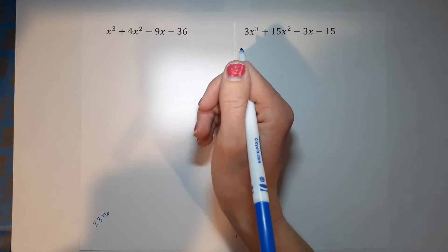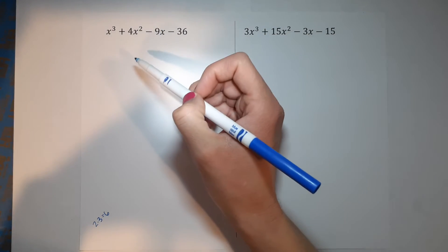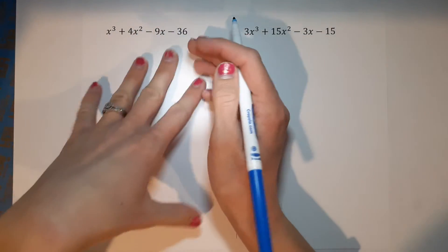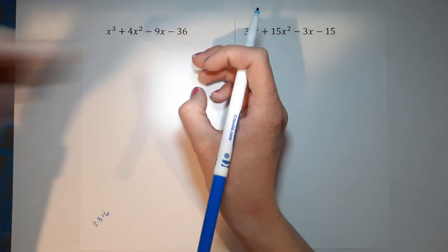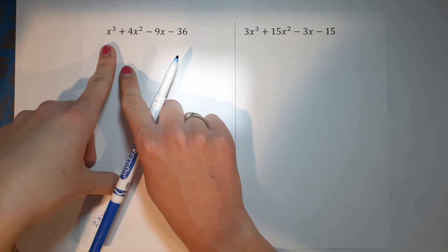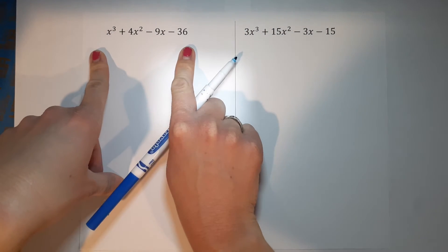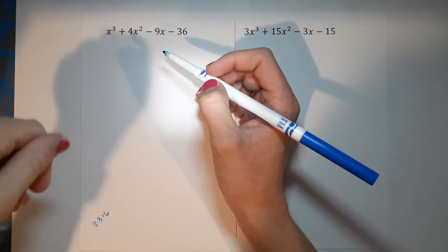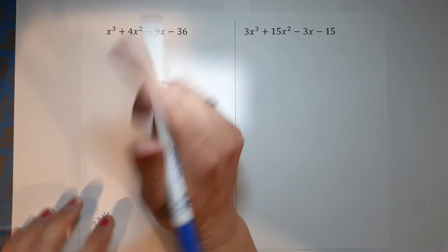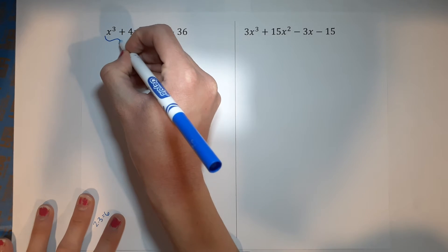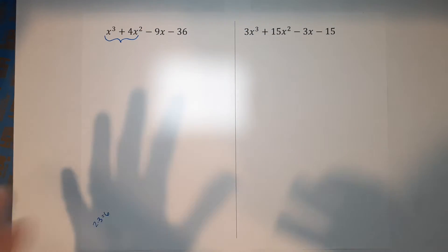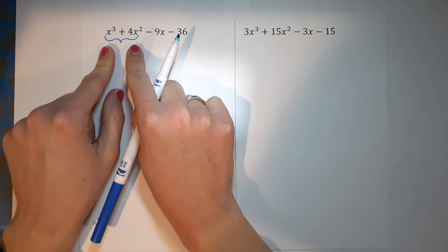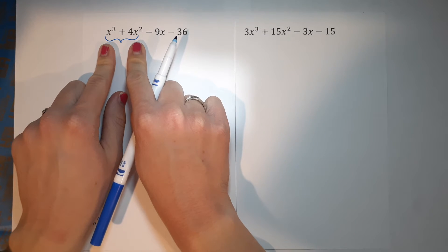The first thing you always want to do is check and see if there's anything that can be pulled out from everything. There's nothing here that can be pulled out of everything, so we are going to factor by grouping. What we do is first look at these first two terms and see if we can pull anything out.